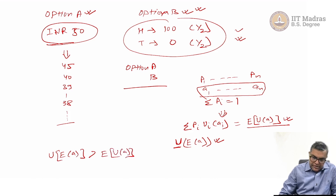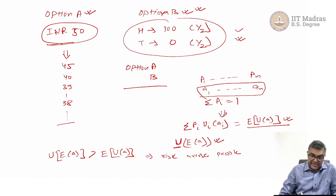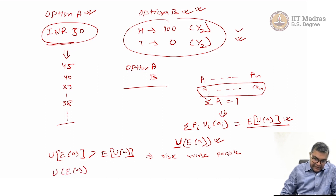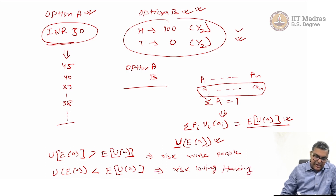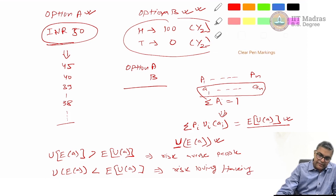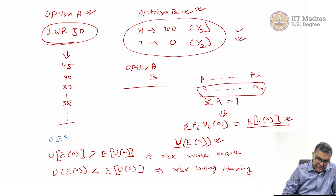U(E(a)) > E(U(a)) because we are risk averse people. There are some people who like taking risk — they are gamblers — and for them U(E(a)) is less than E(U(a)); this is risk loving. Then there is a third category for whom U(E(a)) equals E(U(a)); these people are typically risk neutral. We are going to talk about them one by one.